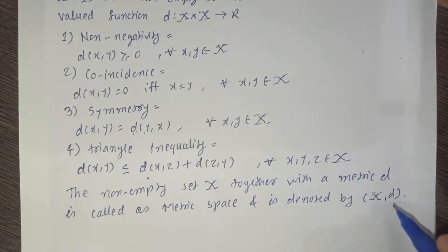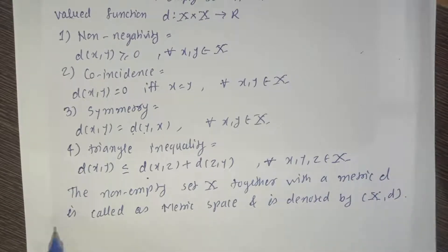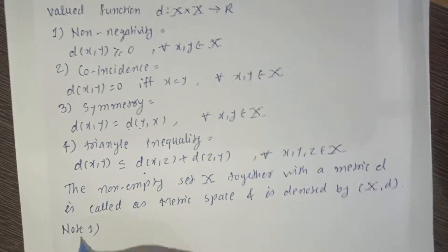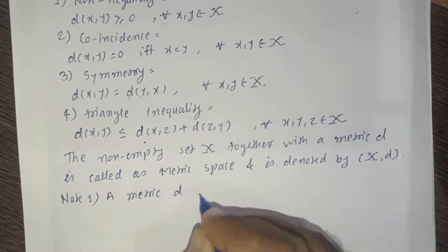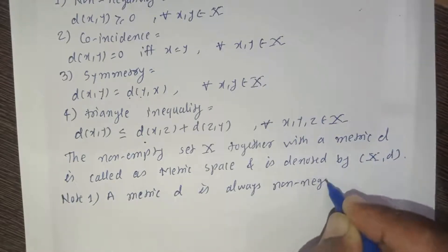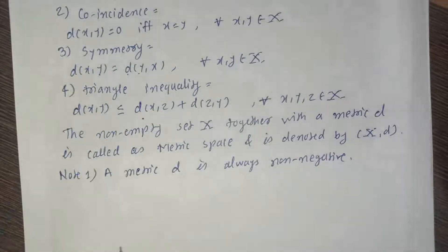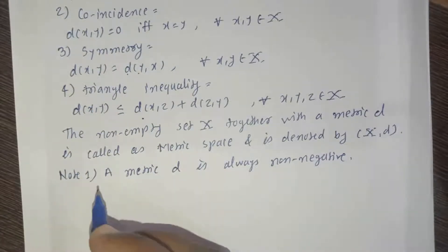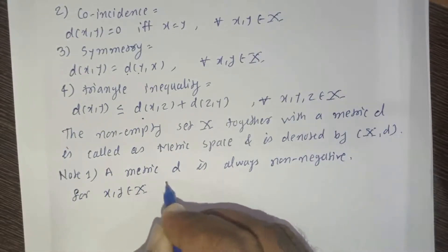Note one: a metric D is always non-negative. How can we conclude this? By using the given conditions — specifically from the triangle inequality. Taking any two points X, Y belonging to X, it follows that...